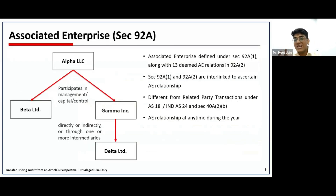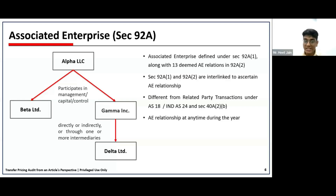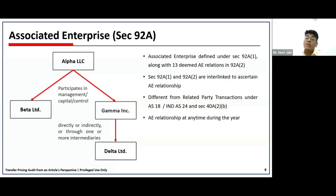Moving to the definition of associated enterprise under Section 92A. There are two sub-clauses: sub-clause one focuses on three important things — it is a broader and subjective definition stating that any entity which participates directly or indirectly in the management, capital, or control of any other entity makes both entities associated enterprises. So Alpha Limited participating directly or indirectly in Gamma Limited and Delta Limited makes Alpha, Gamma, and Delta all associated enterprises as per Section 92A(1).